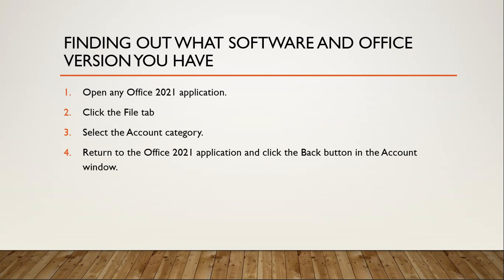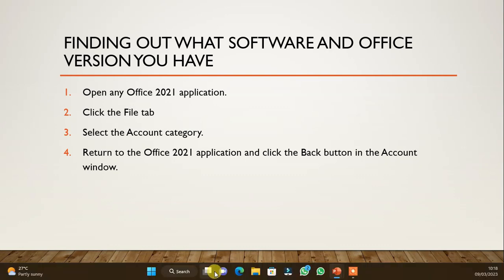To find out the software and Office version on your PC, you need to perform these steps. Open any Office application — Word, Excel, Access, Publisher — then click on the File tab and select the Account category. That is where you see the version and the type of software you are running. I'll be performing this on my system to demonstrate.